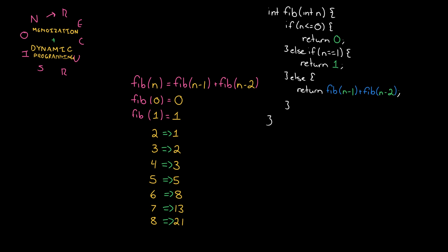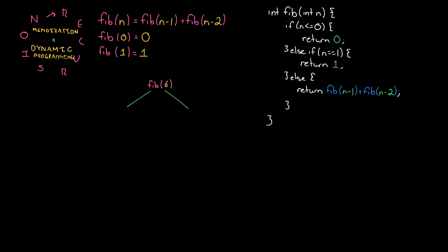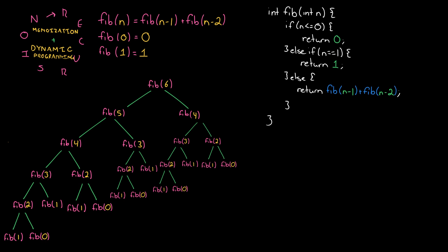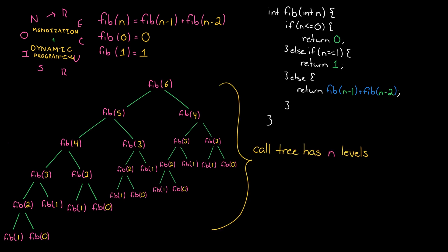But there's a problem when we think about the runtime. If we call this for Fib of 6, Fib of 6 will call Fib of 5 and Fib of 4, 5 will call 4 and 3, 4 will call 3 and 2, and so on. Then we finish a single branch and we still need to do all the other branches, so that's going to get very, very inefficient. If we call this for Fib of n, we'll have roughly n levels in our tree.